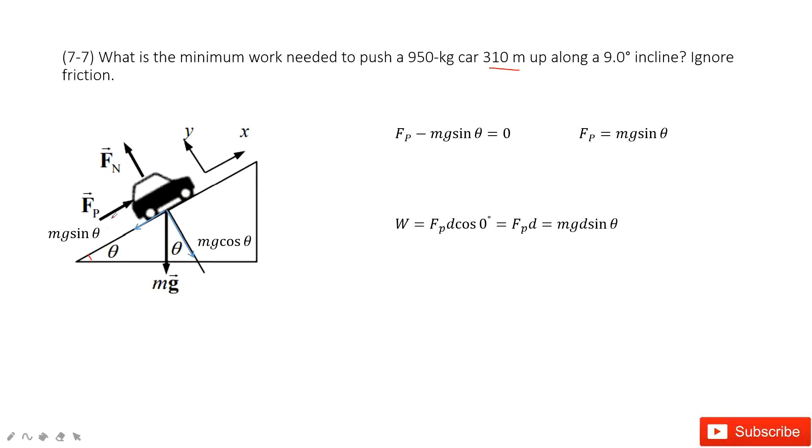But the thing is we need to find the work Fp times d. So the work is Fp times d cosine theta because the force is along the x and the distance also along the x. So theta, angle theta is zero.